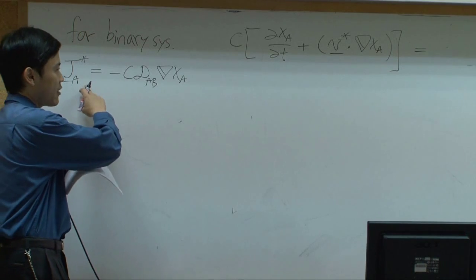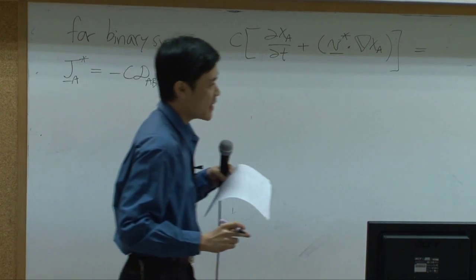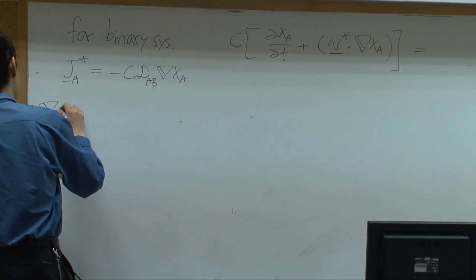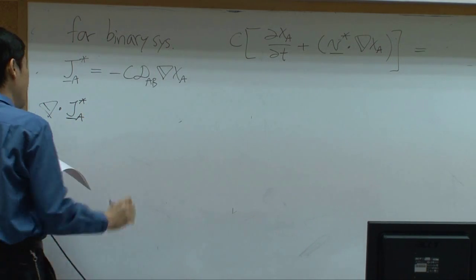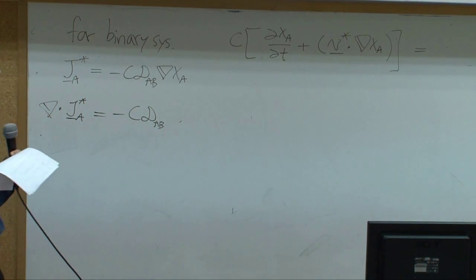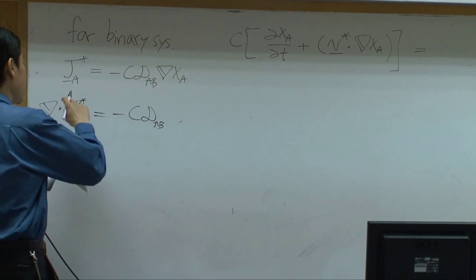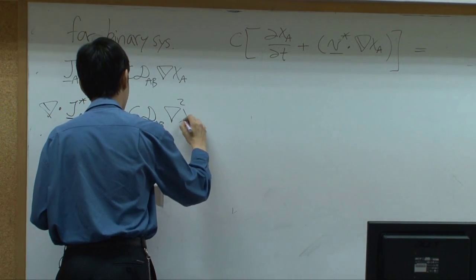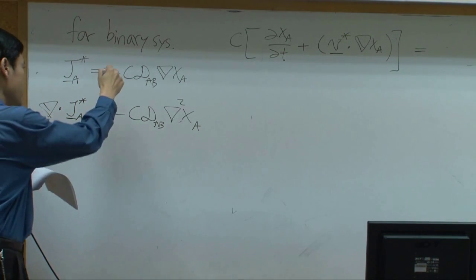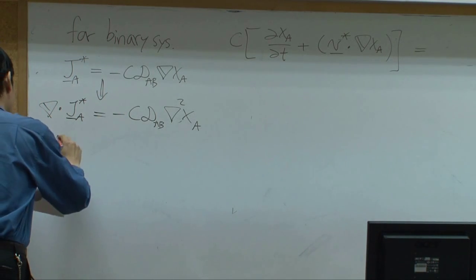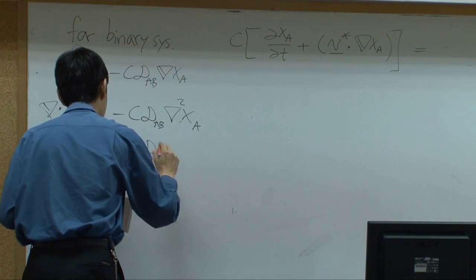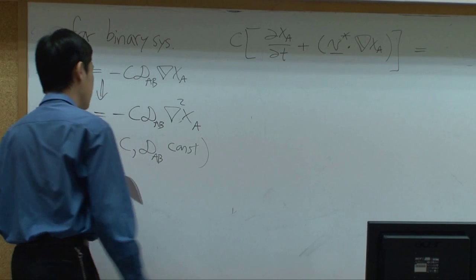Write down jA star and plug it back to that equation. In that equation you have del dot jA star, so you're going to dot them with another del. As a result, you should get cdab, which are considered to be constant, and then del dot del, you'll get del square xa.